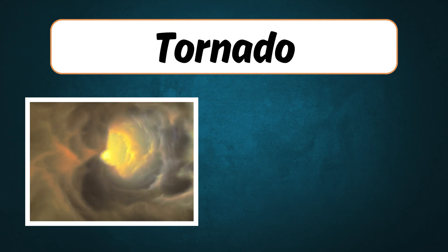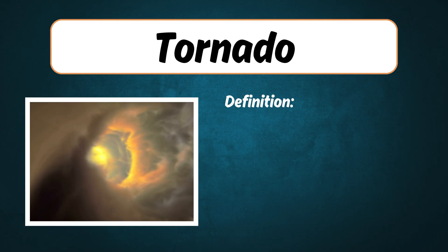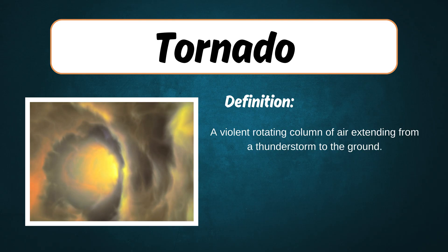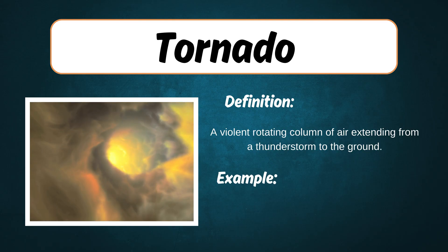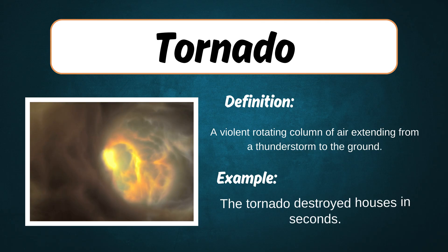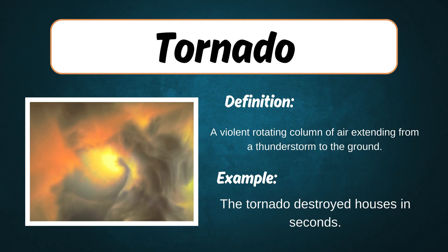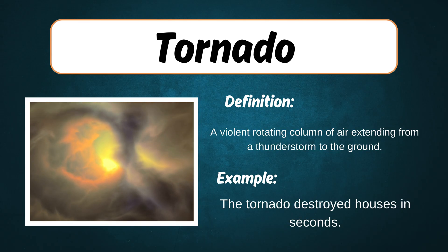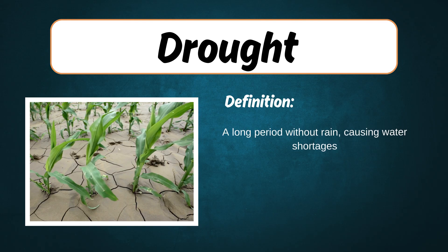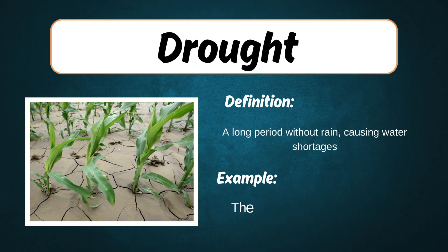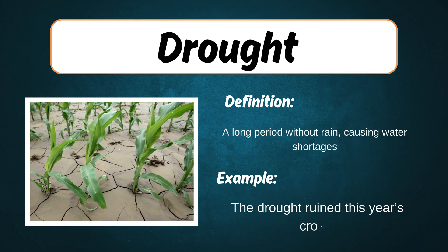Tornado. Definition: A violent rotating column of air extending from a thunderstorm to the ground. Example: The tornado destroyed houses in seconds. Drought. Example: The drought ruined this year's crops.